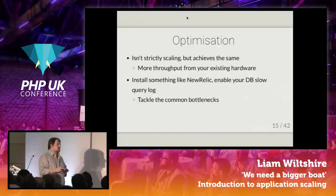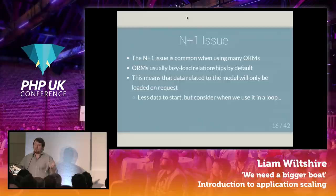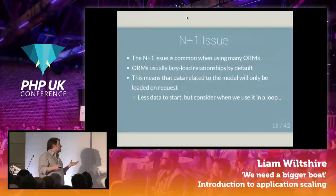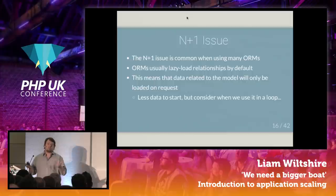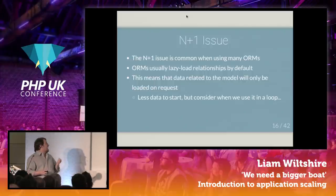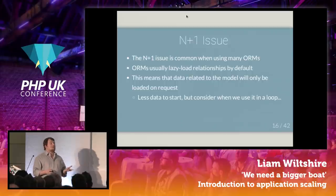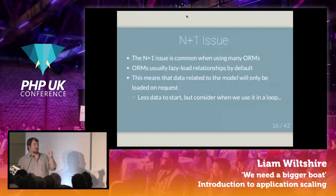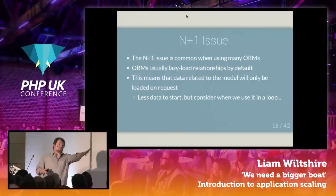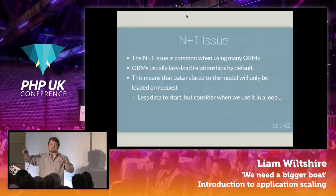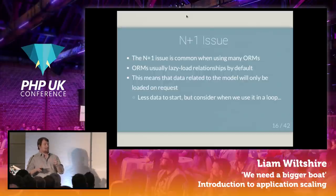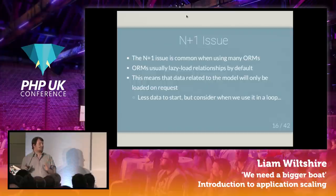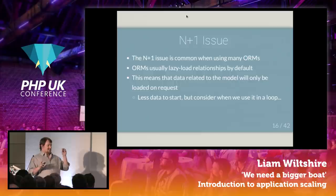An interesting example is the N+1 issue. Some of you have heard of it — I can see nodding heads and wry smiles. The N+1 issue is common if you're using an ORM, because an ORM will say, I've got this model and I want to relate it to this other model, here's the relationship — and then it'll give you a way to access that relationship. It makes life brilliant when you're writing code, because you can just do all this stuff and not really have to think about it until you do.